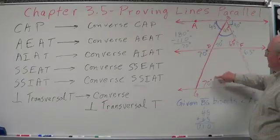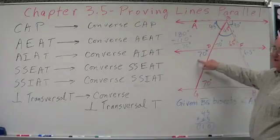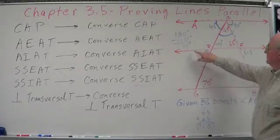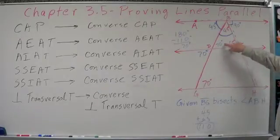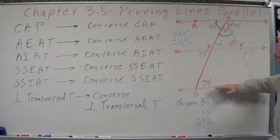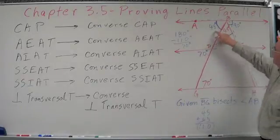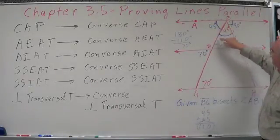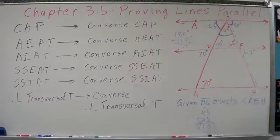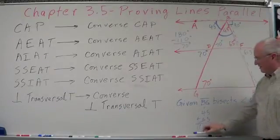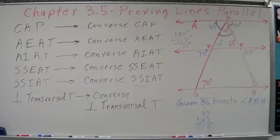We just proved this right here. We have alternate interior angles that are congruent, so those lines have to be parallel. We have corresponding angles that are congruent, so these two lines have to be parallel. We also have two corresponding angles that are not congruent, so those lines can't be parallel. Over here, alternate interior angles are not congruent — those two lines cannot be parallel. That's an introduction to proving lines parallel.